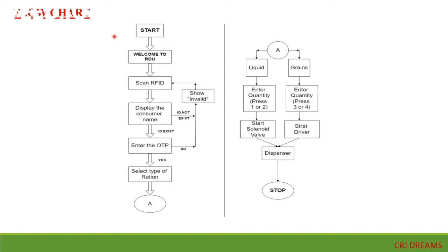This is the flowchart of the project. When stock arrives at the shop, the shopkeeper sends a message to consumers to collect their ration. When a consumer arrives at the shop, a welcome message is shown on the LCD display and they must scan the RFID card given to them. If the card is valid, the consumer's name is displayed on the LCD. If the card is not valid, it shows as invalid or does not exist. If the card is valid, an OTP is sent to the consumer's mobile and they must enter the same OTP using the hex keypad.